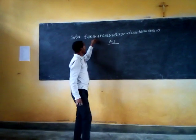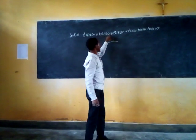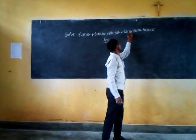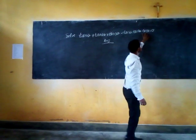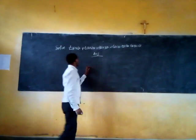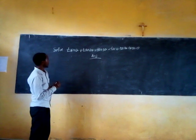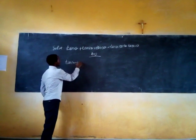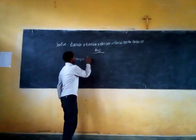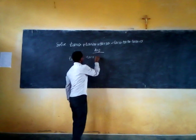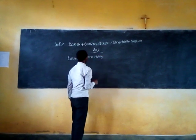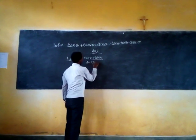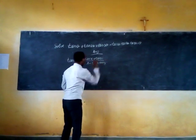Remember that tan(x + y) is equal to tan(x) plus tan(y) divided by 1 minus tan(x) times tan(y).